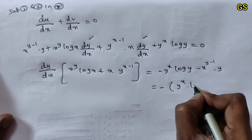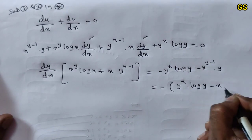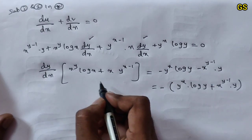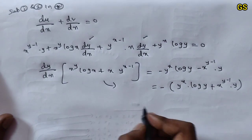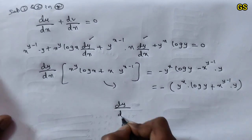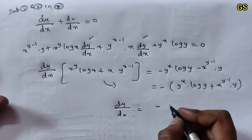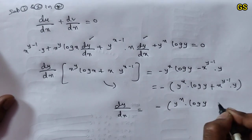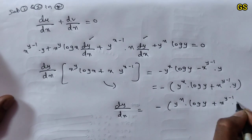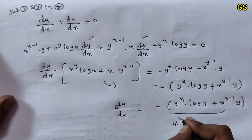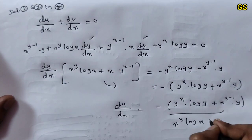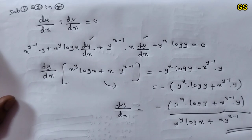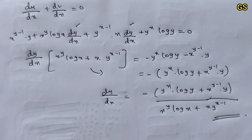So dy/dx equals (y power x log y plus x power (y minus 1) times y) in the negative, divided by (x power y log x plus x times y power (x minus 1)). This is the answer for sub-problem 2.